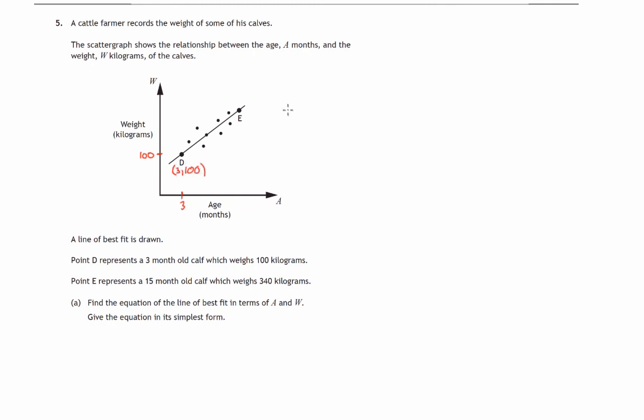In a similar way it tells you that E represents a calf that's 15 months old. So the x coordinate is 15 and it weighs 340 kilograms.